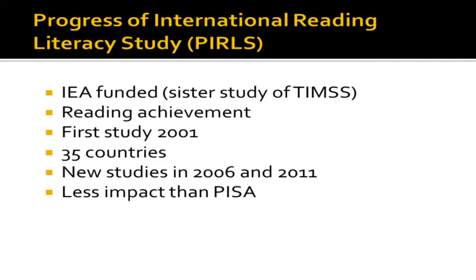PIRLS is the little sister of TIMSS and is the reading version — where TIMSS covers maths and science, PIRLS covers reading achievement. It can be found on the same website. Studies were conducted in 2001, 2006, and 2011. PIRLS appears to have less political impact than PISA or TIMSS.